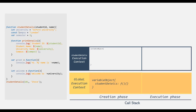Here we are going to use the same example from our last lecture. We have this studentDetails function. To this function, we are passing a studentID and name parameter. Inside this function, we are declaring three variables using different keywords, and we also have one function declaration and two function expressions. Then we are calling this studentDetails function. When it is called, an execution context for this function will be created in the call stack. An execution context gets created in two phases: creation phase and execution phase.